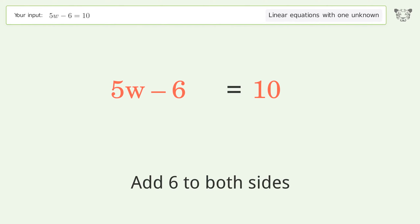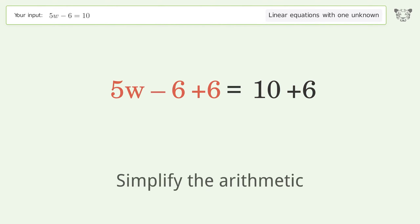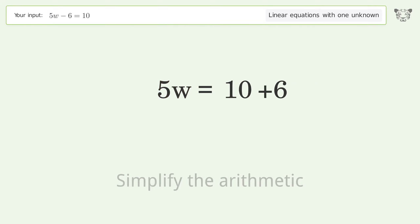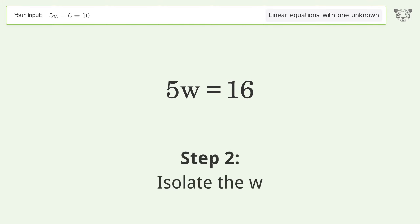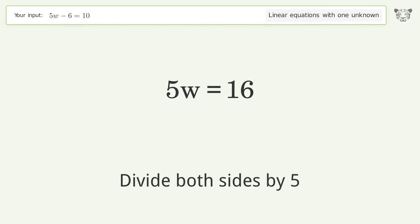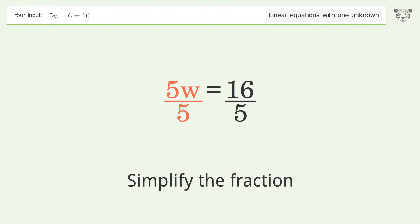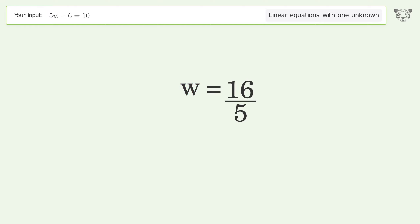Simplify the arithmetic. Then isolate w by dividing both sides by 5 and simplify the fraction. The final result is w equals 16 over 5.